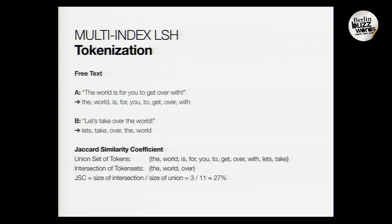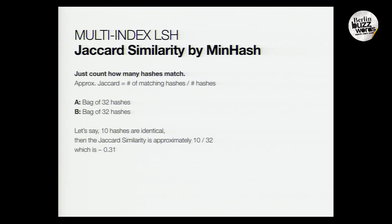How do we calculate distance for this algorithm? We use the Jaccard similarity coefficient. Given some text, we tokenize it, look at the total set of tokens and how many appear in both sentences — for example, if three tokens are the same, we get a 27% match. If we hash the tokens, we have a set of hashes instead of actual tokens, and we can approximate similarity by counting how many hashes are identical between two data points and dividing by the total number of hashes. With 10 out of 32 hashes matching, we get approximately 31% similarity.